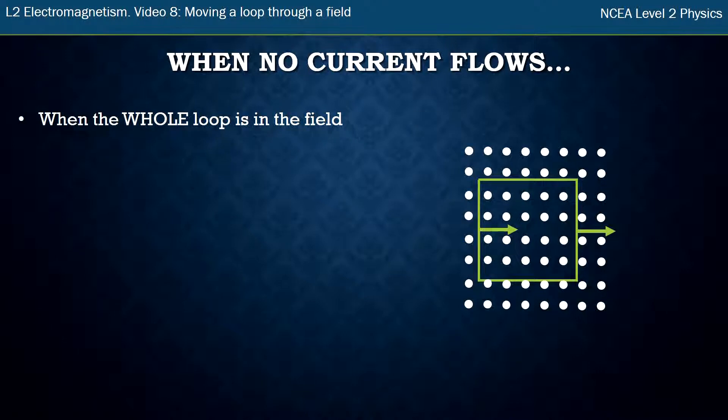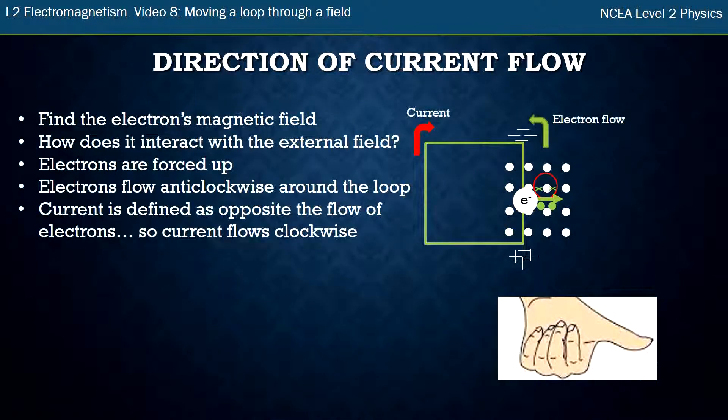This is the situation where no current flows. If you look at the last one you see that only the right hand side of the loop is in the field moving through the field and the left hand side of the loop is outside the field.